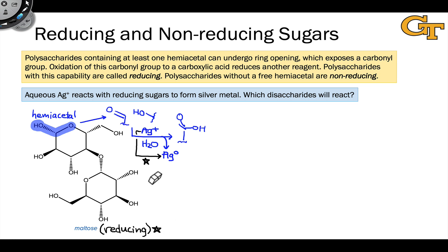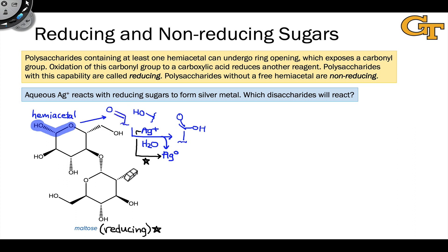Ultimately, the reducing behavior of maltose stems from its ability to form a hemiacetal, at least to a small extent, when dissolved in water. This free hemiacetal is key to the reducing ability of maltose.